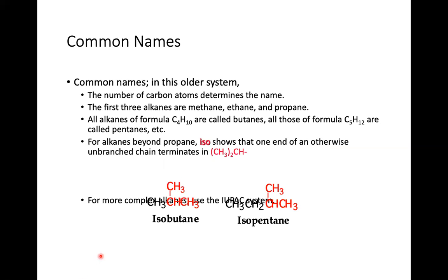In the older common name system, the number of carbon atoms determines the name. The first three alkanes are methane, ethane, and propane. C4H10 alkanes are called butane, C5 is pentane. For alkanes beyond propane, the prefix 'iso-' shows that one end of an otherwise unbranched chain terminates differently — hence isobutane and isopentane, which have recognizable line structures.